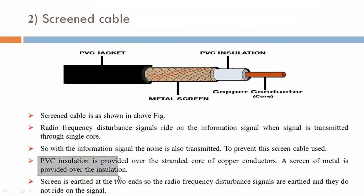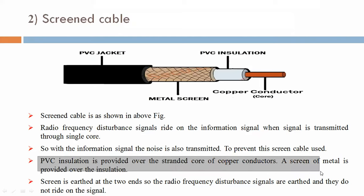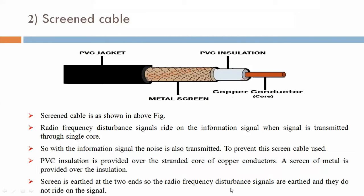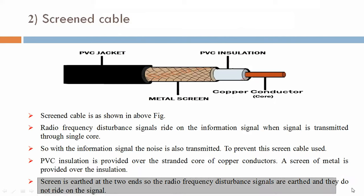PVC insulation is provided over the standard core of copper conductor. A screen of metal is provided over the insulation. The screen is earthed at both ends, so the radio frequency disturbance signals are earthed and they do not ride on the signal.